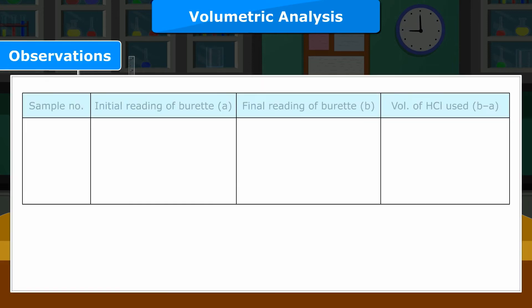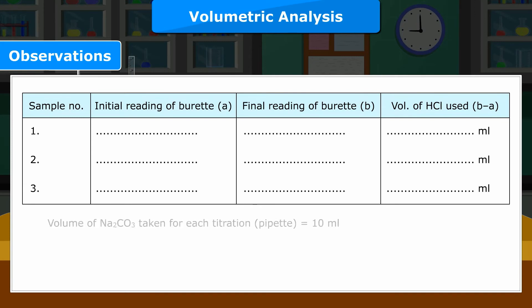Observations: Sample number, Initial reading of burette (A), Final reading of burette (B), Volume of HCl used (B-A). Samples 1, 2, 3. Volume of Na2CO3 taken for each titration (pipette) is 10 ml. Concordant reading equals volume of HCl used.